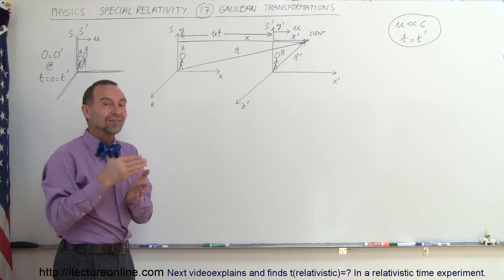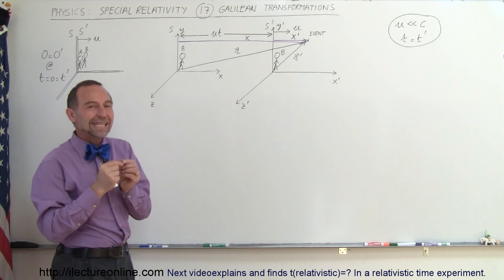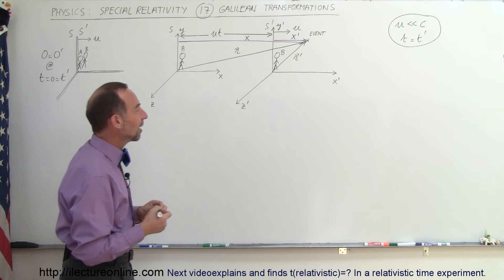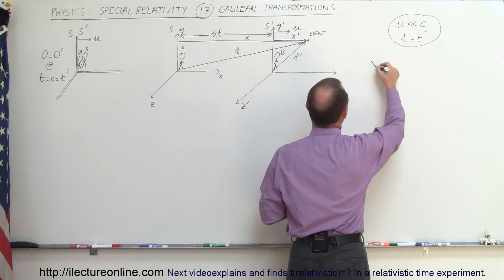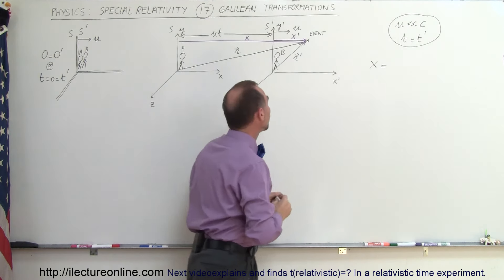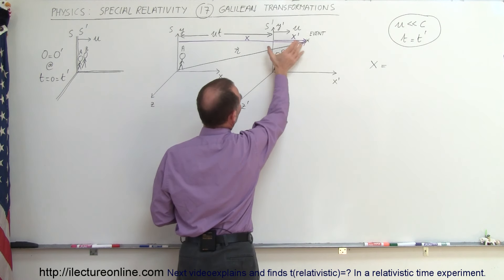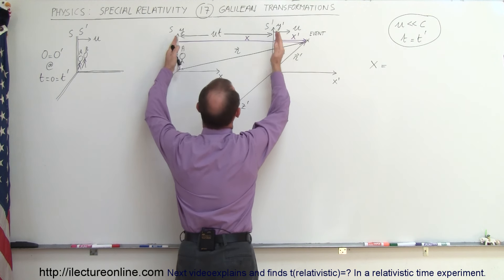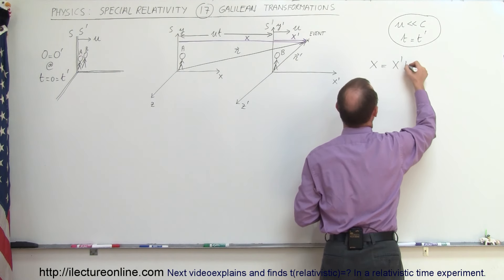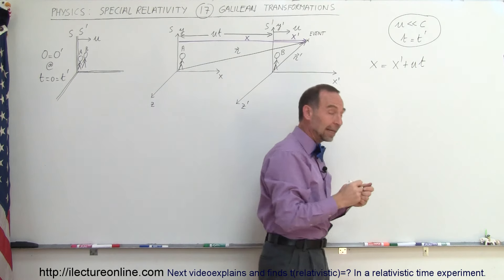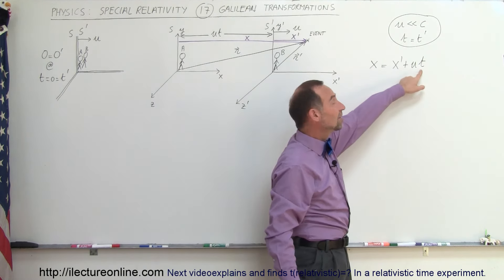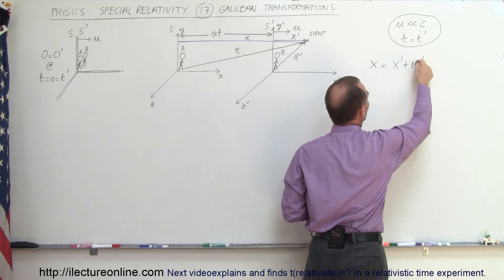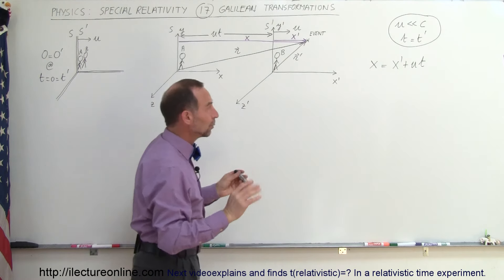Since we're only moving in the X direction, the Y and Z components in both reference frames are the same. To find X in terms of X prime: X prime is the distance of the event from the origin in the X direction, and the separation between frames is U times T, so X equals X prime plus U times T. In the Galilean transformation, since T equals T prime this equation stands as is. In the Lorentz transformation, T and T prime are not equal so an adjustment is needed — but not here. Y equals Y prime, and Z equals Z prime.